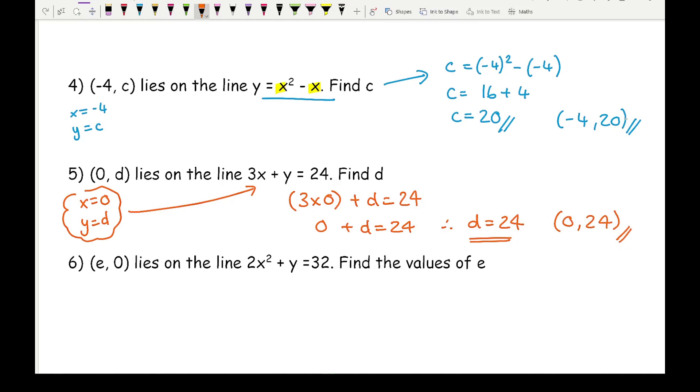Then for question 6, it says (e, 0) lies on the line 2x squared plus y equals 32. Find the values of e. I've got x equals e and y equals 0. I'm going to substitute those values into this equation. So I've got 2e squared plus 0 equals 32.